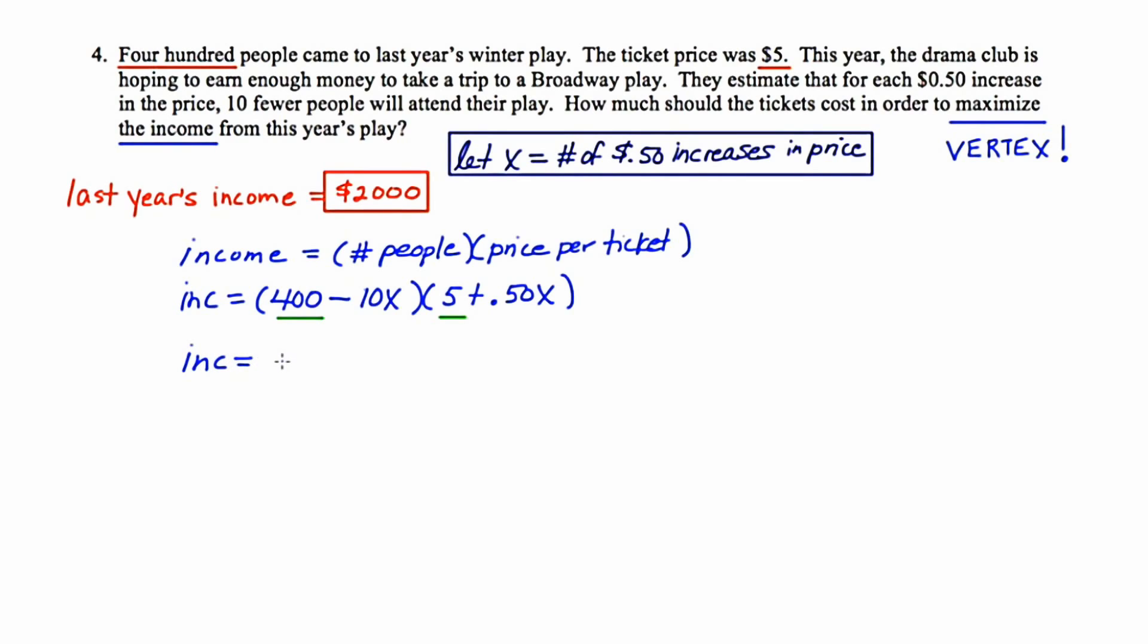It's in some weird factored form right now, so maybe if we multiply together this will become more evident. I'm going to FOIL. First we get 400 times 5, or 2000. Outer is 400 times one half x, or 200x. Inner will be negative 10x times 5, or negative 50x. Last will be negative 10x times one half x, or minus 5x squared. Now this is looking more like a quadratic. I'm going to combine like terms and shift things around, and say negative 5x squared plus 150x plus 2000.